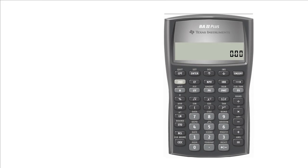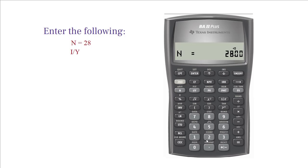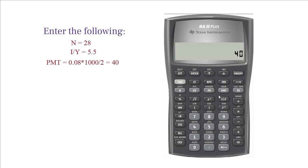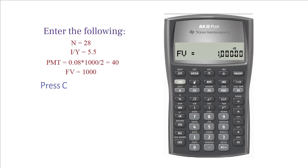With your financial calculator, enter the following. N equals 28. I/Y or YTM equals 5.5. PMT equals 40. FV or face value equals 1,000. Now compute PV.